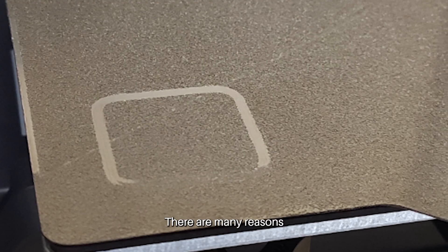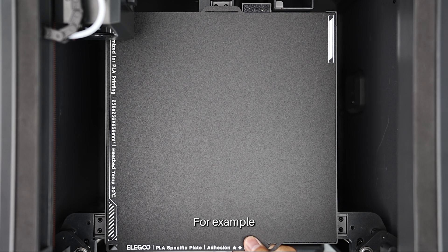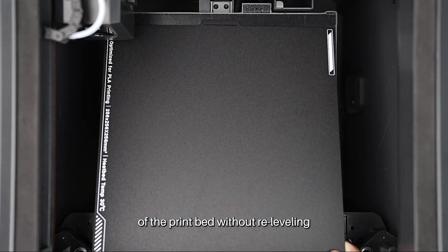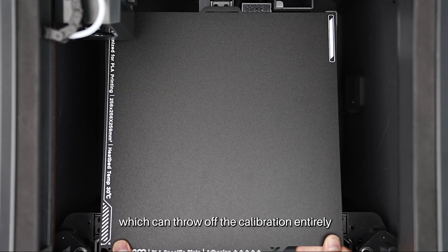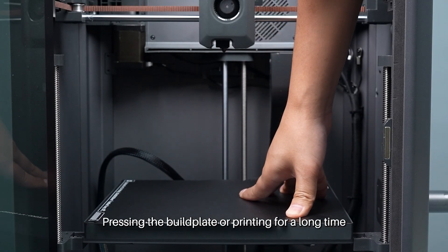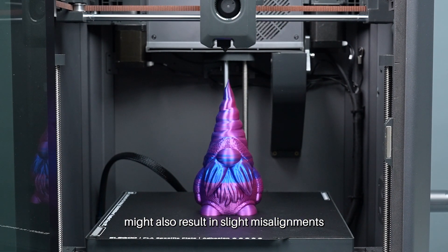There are many reasons why these issues might occur. For example, you might switch to the reverse side of the print bed without re-leveling, which can throw off the calibration entirely. Pressing the build plate or printing for a long time might also result in slight misalignments.